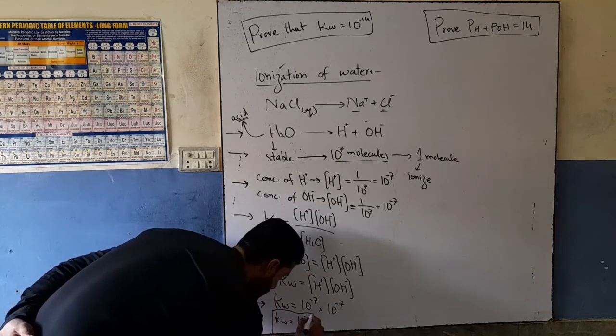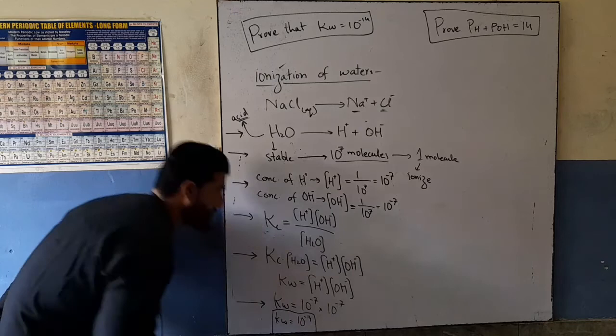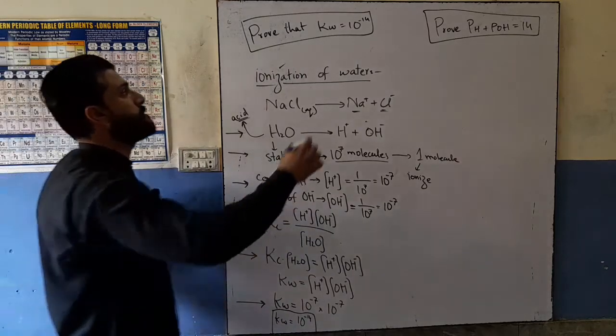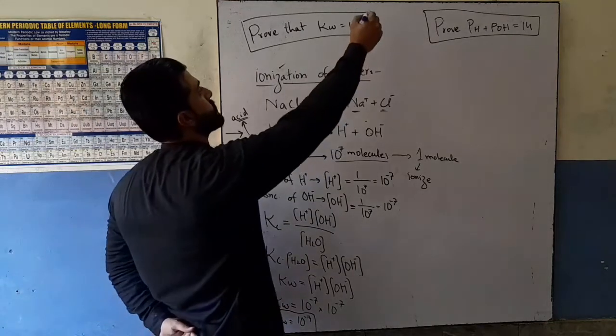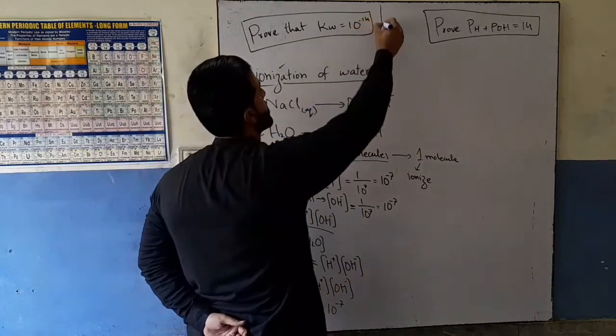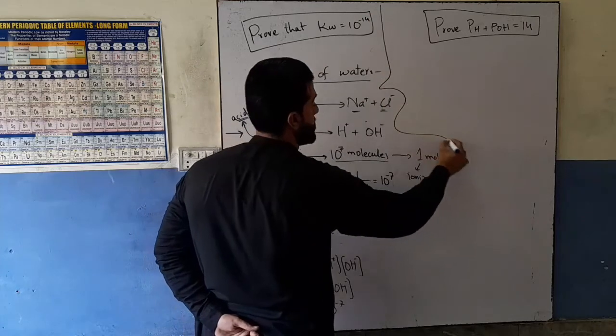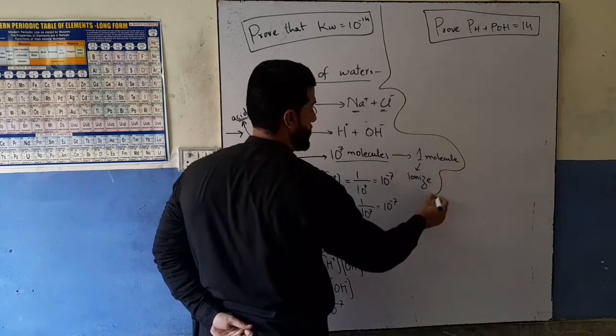Kw equals 10 to the power minus 14. This completes the proof that Kw is equal to 10 to the power minus 14. The question was: ionization of water — if water is stable, our solution follows from this.